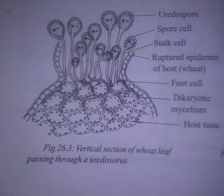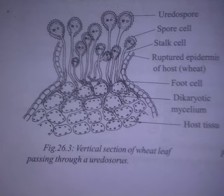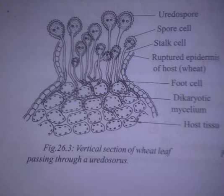The uredospores are spore cells, and the stalk cells are small foot cells. The uredospore cells are uninucleate or bi-nucleate in structure. It has a thick wall consisting of two layers.